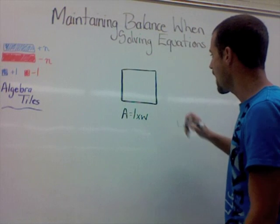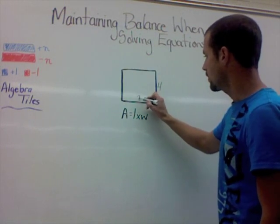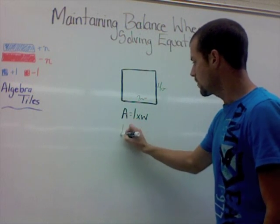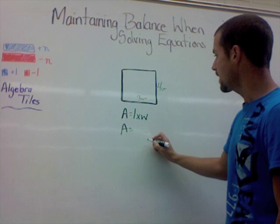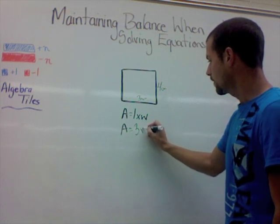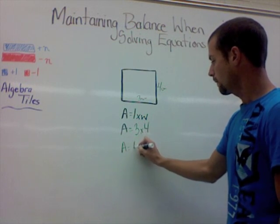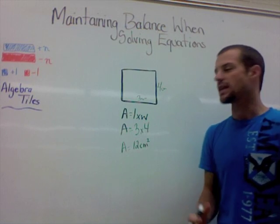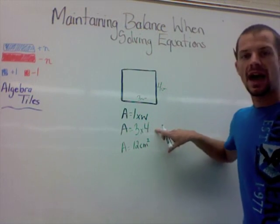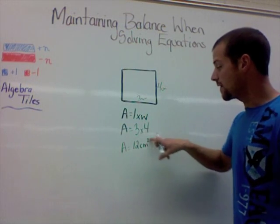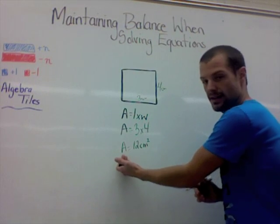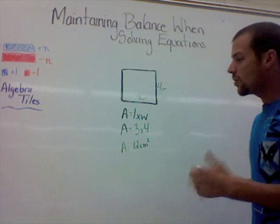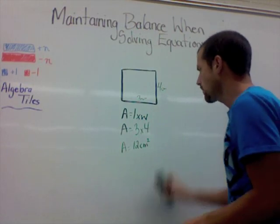So if this rectangle had dimensions of three centimeters by four centimeters, you could easily substitute that in. You already know how to take these letters, substitute in the actual values once you know what they are, and then work within the context of the formula to find out what the area is — the variable you actually want to find. When you're working with algebra, it's much the same thing.